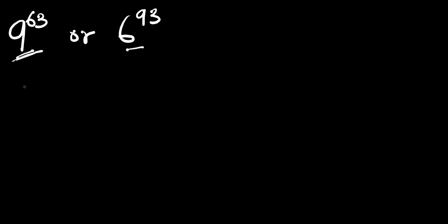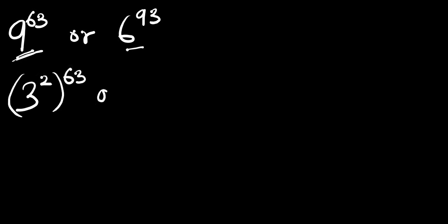Instead of 9 we are going to rewrite it as 3 to the power of 2, all to the power of 63. And instead of 6 we can rewrite it as the product of 3 and 2, all to the power of 93.